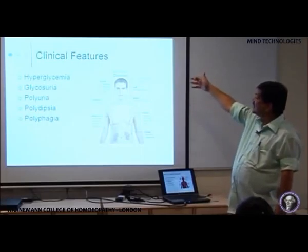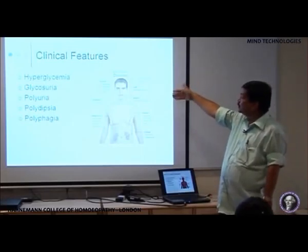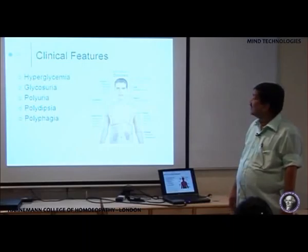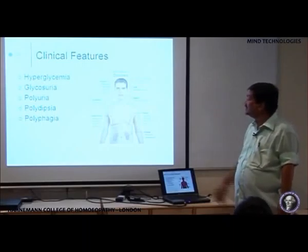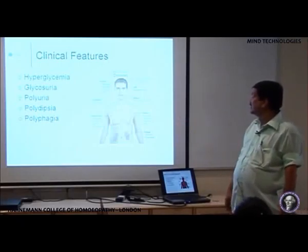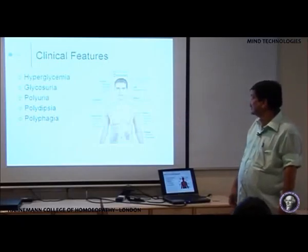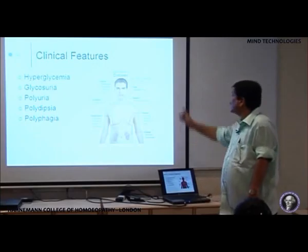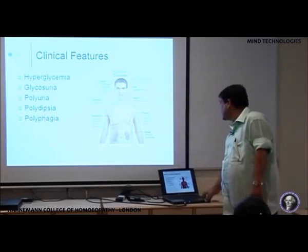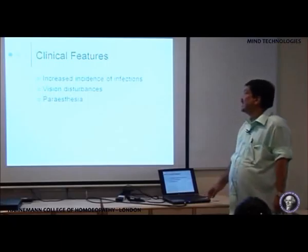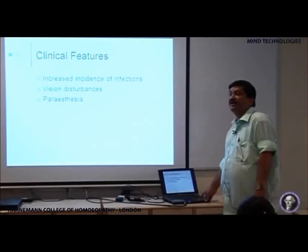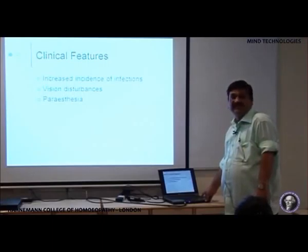The lesser symptoms are lethargy, stupor, weight loss, breath smelling of acetone, fast labored breathing — what is known as Kussmaul's breathing — nausea, vomiting, abdominal pain, and urinary infections. These lesser symptoms are usually seen in cases of type 1 diabetes mellitus. In type 2 diabetes mellitus, polyuria, polydipsia, and glycosuria are usually the main presenting features.